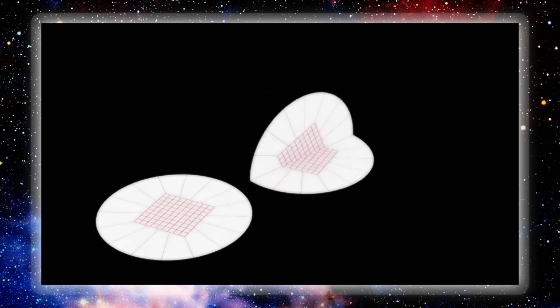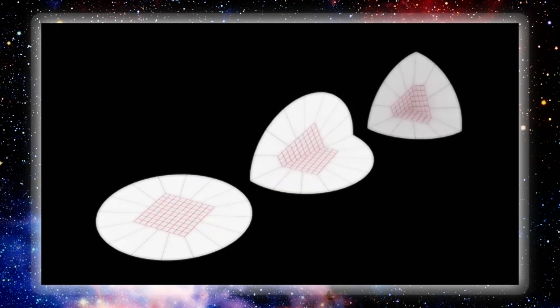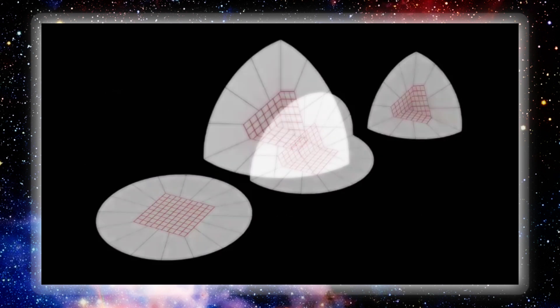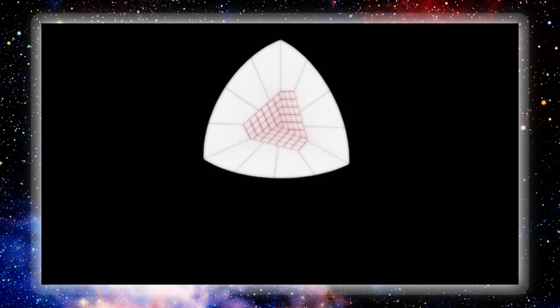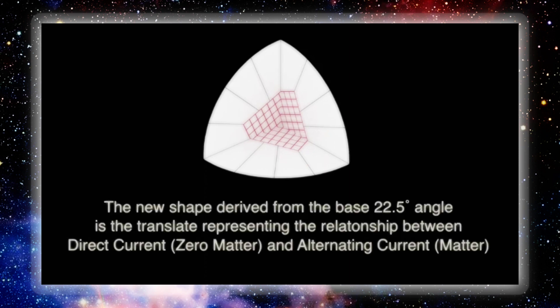The octave model, when folded, demonstrates the alteration of the area-time-volume as it metamorphoses from the high charge density fifth dimension to the low charge density first-dimensional base. The new shape derived from the base 22.5-degree angle is the translate, representing the relationship between direct current — which is zero matter — and alternating current — which is matter.